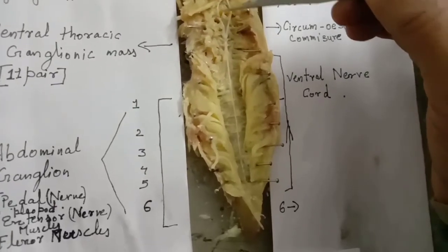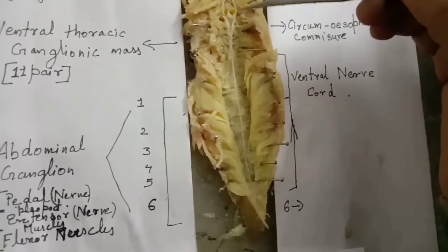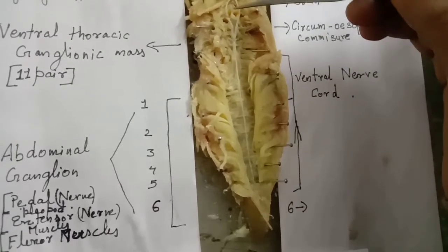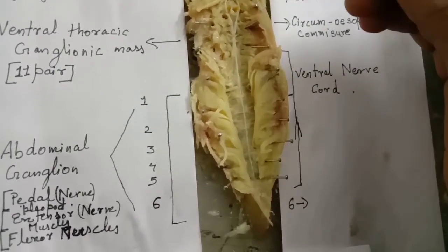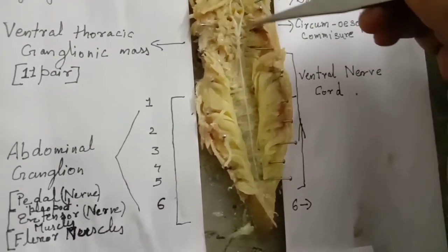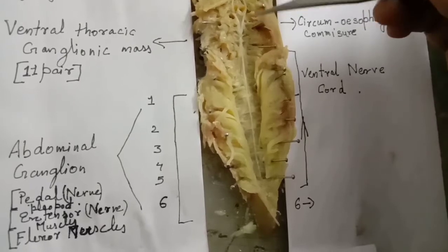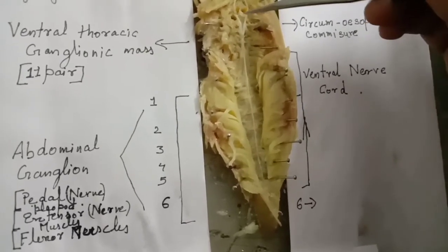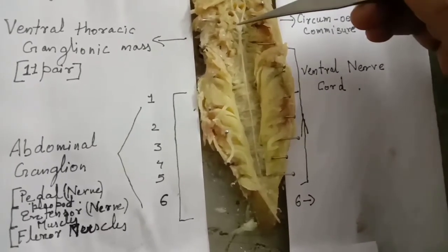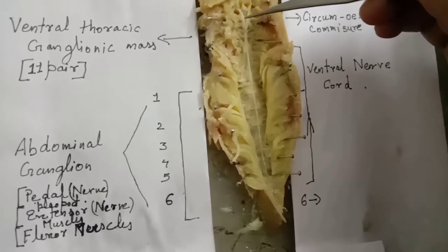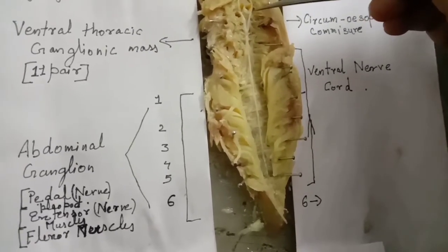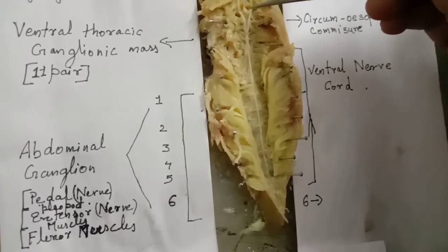Next is the circumesophageal commissure. The brain gives rise to a pair of thick posterior circumesophageal commissures which surround the esophagus and unite together ventrally with the subesophageal ganglion. A transverse connective joins the two commissures.